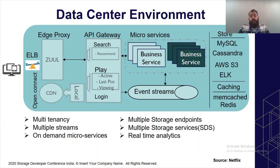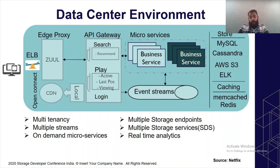How does a typical data center environment look? This is a data center for Netflix, a prominent media server that renders videos on demand. Multiple devices — phones, tablets, and PCs — are accessing Netflix at any given time. Each device is unique in the codecs it supports, with separate streams of IO. Each device might be playing a different movie or performing a different query — search, analytics, account management, etc.